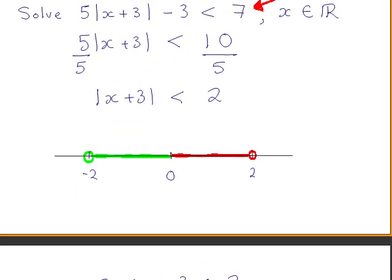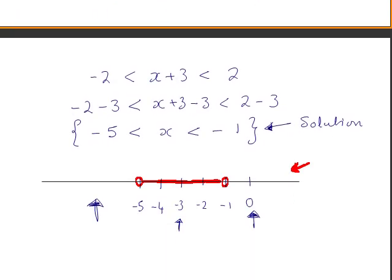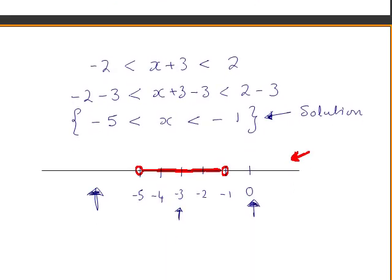So we were asked to solve 5 times the absolute value of x plus 3 minus 3 is less than 7. Our answer is x is any real value between minus 5 and minus 1.